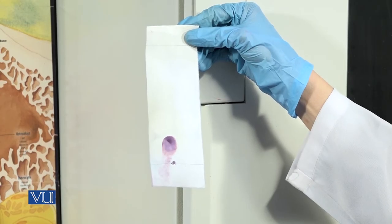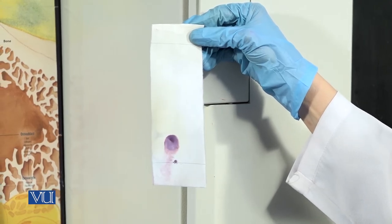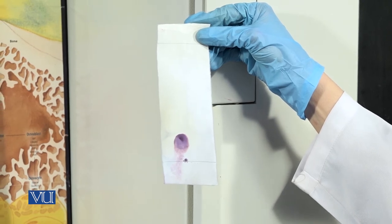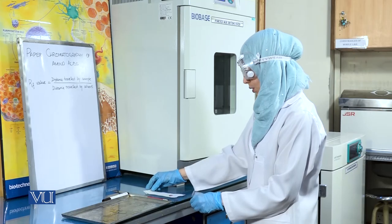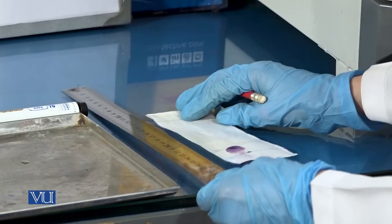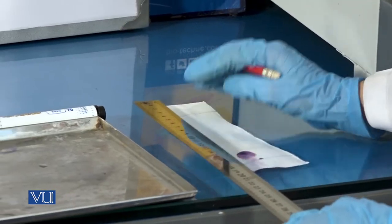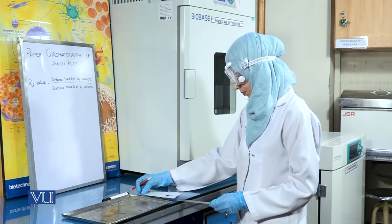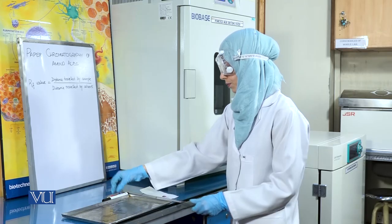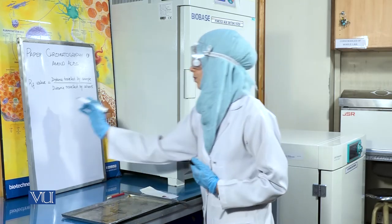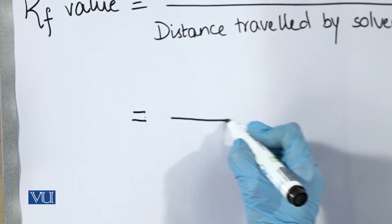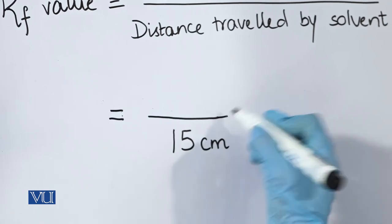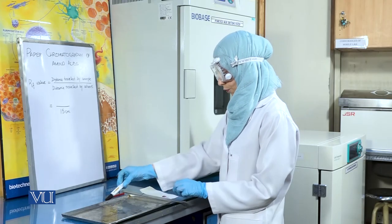We will now proceed towards the calculation of the RF value or the retardation factor, also known as relative mobility or retention factor. For this, we will first measure the distance travelled by the solvent on the filter paper. We have already marked the solvent front. This comes out to be 15 cm for our sample.